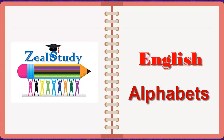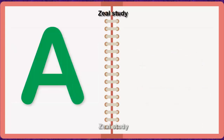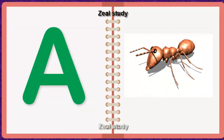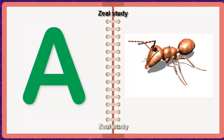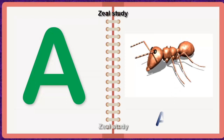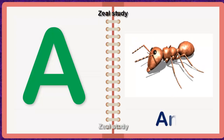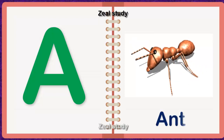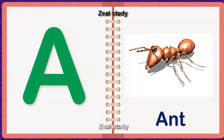Welcome. We are now going to see about English alphabets. A for Angel. A, N, G, E.